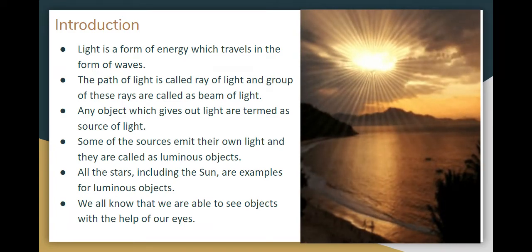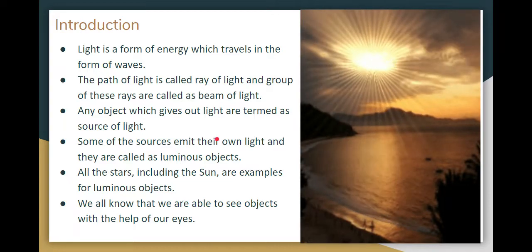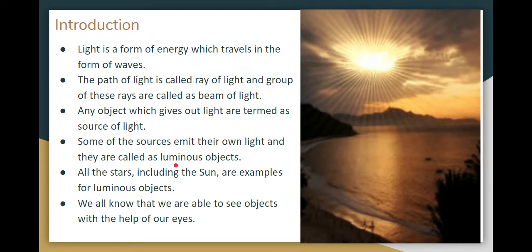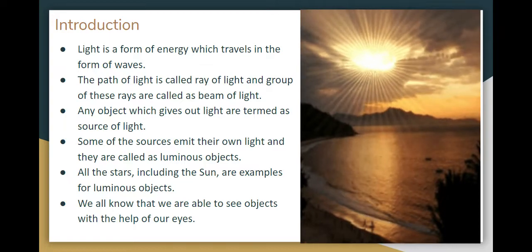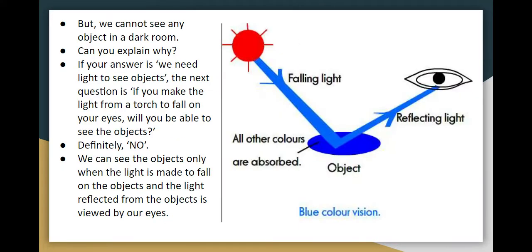Objects that emit their own light are called luminous objects — for example, stars, including the sun. Light starts to shine and comes off these sources brightly. You can see objects when light falls on them and reflects to your eyes.